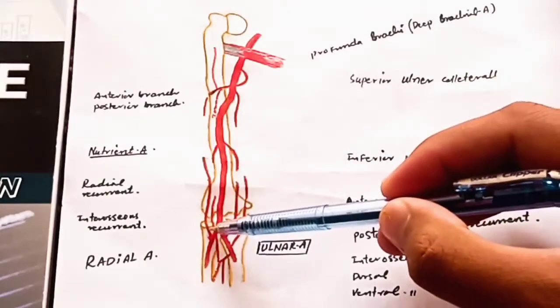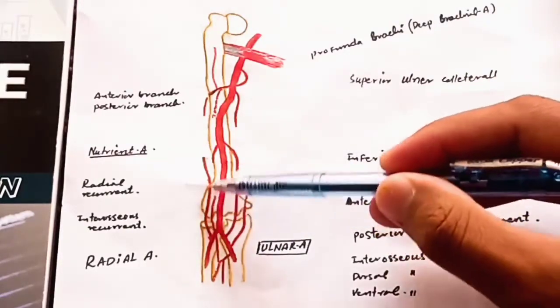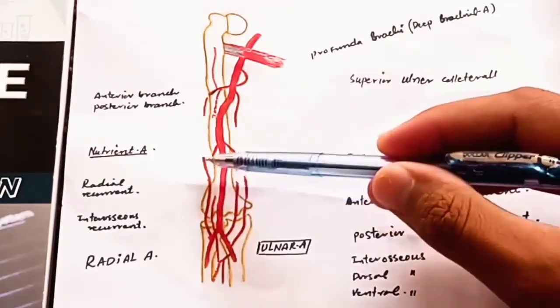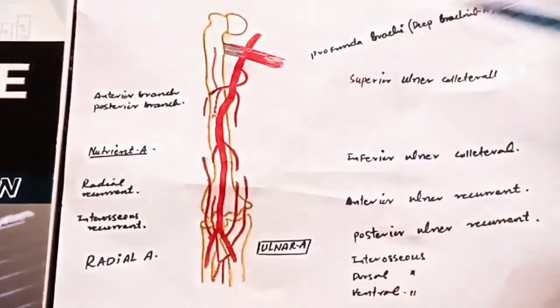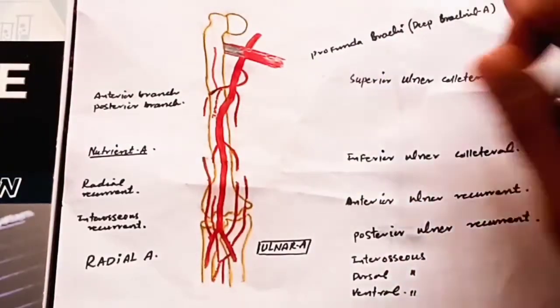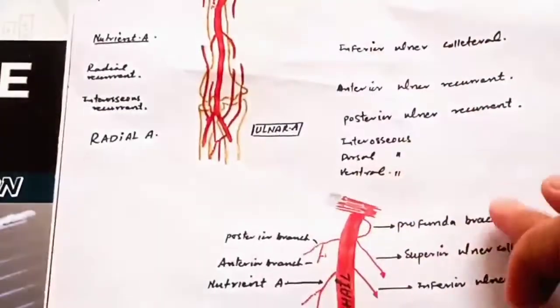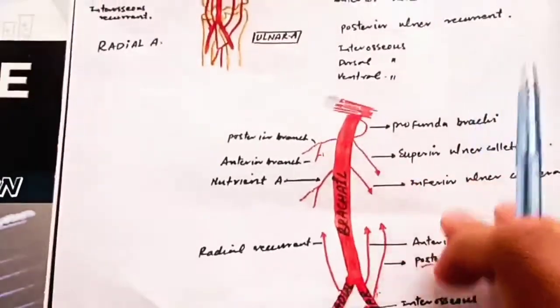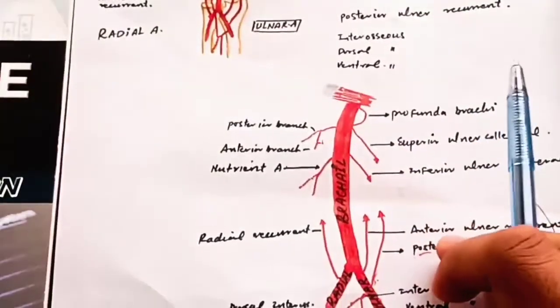From the dorsal interosseous artery, one branch arises called the interosseous recurrent artery. From the radial artery, there is only one branch, which is called the radial recurrent artery. I have shown here a clear picture of the brachial artery and its branches.